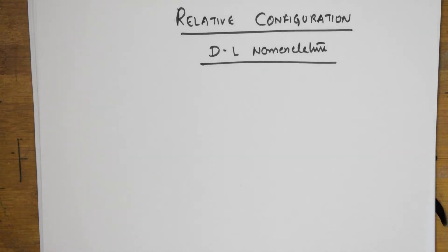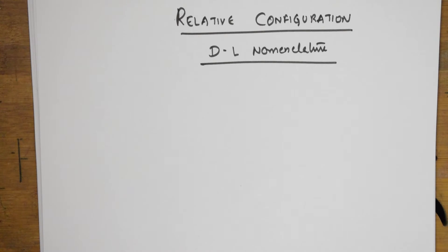Welcome back students to one more session on relative configuration — that is DL nomenclature. I'll also be teaching about RS nomenclature. In the previous video I taught you what is meant by racemization or racemic mixture, how configuration is retained, and what is inversion of configuration. Please watch the previous video; all videos are interlinked.